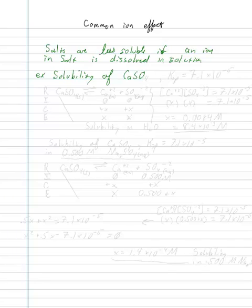You can see that in a familiar quadratic equation. Or you can just use your calculator and solve for X. And we find in either case, X is equal to 1.4 times 10 to the negative 4 moles per liter. This is our solubility in 0.500 molar Na2SO4.